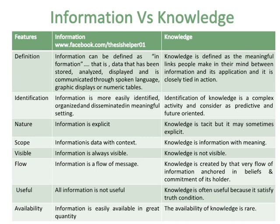Information is more easily identified, organized and disseminated in a meaningful setting, while identification of knowledge is a complex activity and is considered predictive and future-oriented. The nature of information is explicit, while the nature of knowledge is tacit but may sometimes be explicit. The scope of information is data with context, while the scope of knowledge is information with meaning.